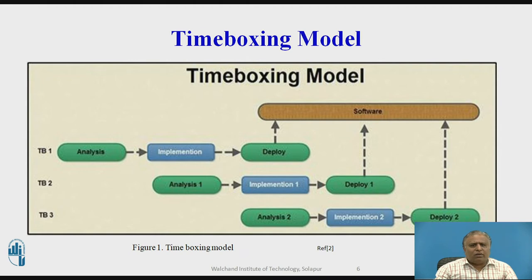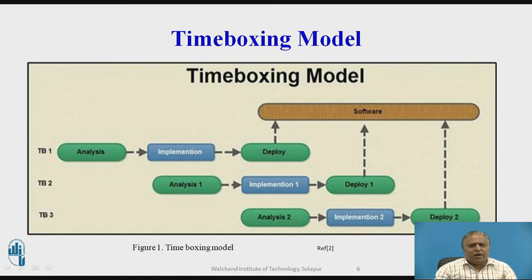Now we are going to see the time boxing model. This is the diagram of the time boxing model, showing the software we are going to develop. TB1 means time boxing frame 1, TB2 is time boxing frame 2, and TB3 is time boxing frame 3. In TB1, there are three activities: analysis, implementation, and deployment. In implementation, designing and coding are done.